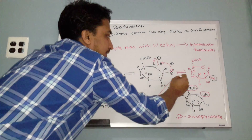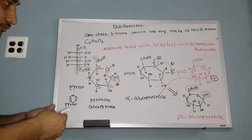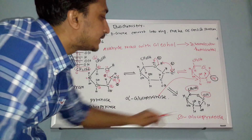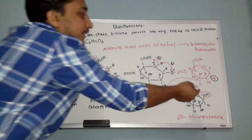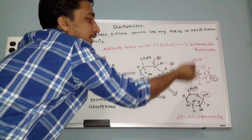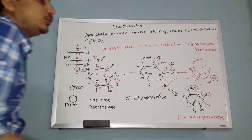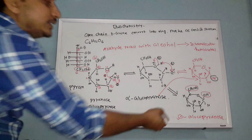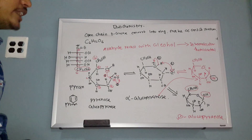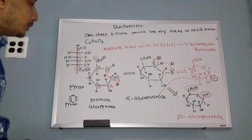In the other structure, the OH at C1 is in the up position and the CH2OH at C6 is also in the up position — both are on the same side. That's why this one is beta structure, named beta glucopyranose.